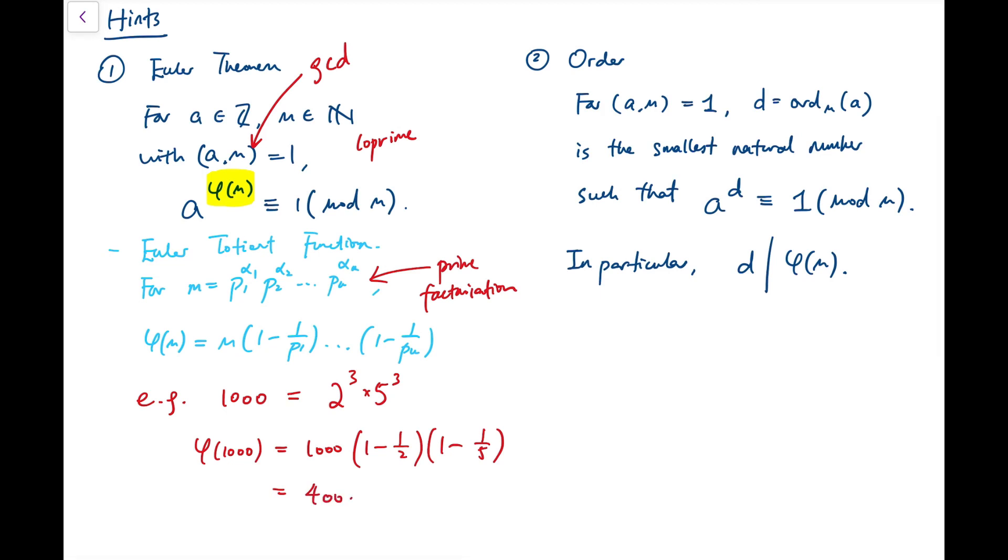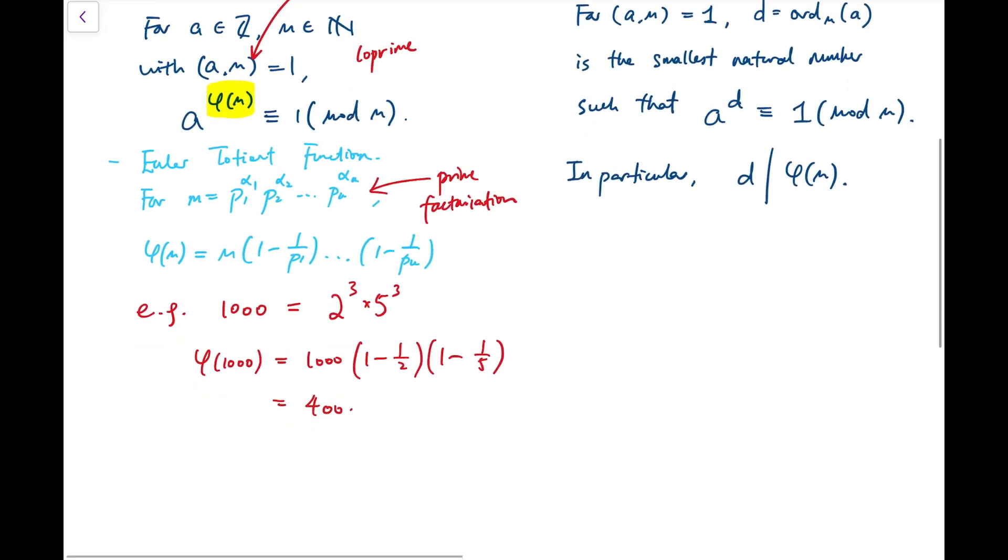In fact, this number is also representing the number of natural numbers, or the number of positive integers, such that that is between 1 and 1000, and coprime with 1000. There are actually 400 of such numbers. That's Euler's totient function and Euler's theorem.